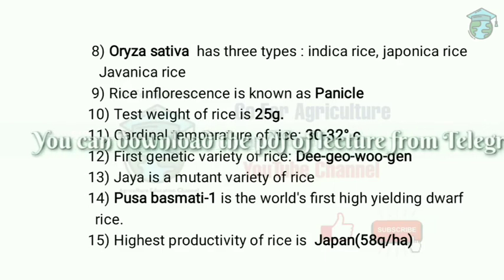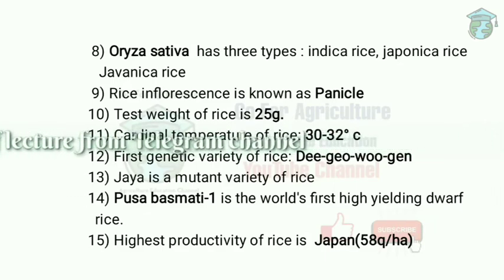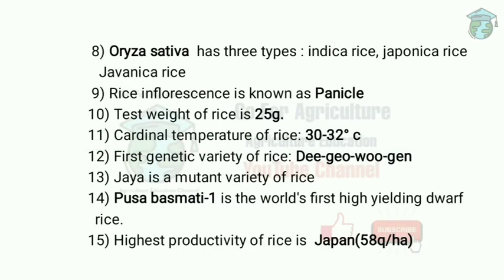The first genetic variety of rice is DG1, a dwarf variety that is nitrogen responsive, developed during the Green Revolution. Jaya is a mutant variety of rice — this is a very important question asked in many competitive exams. The world's first high-yielding dwarf variety of rice developed by IARI is known as Pusa Basmati 1.